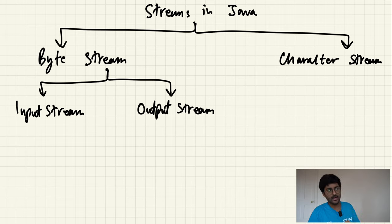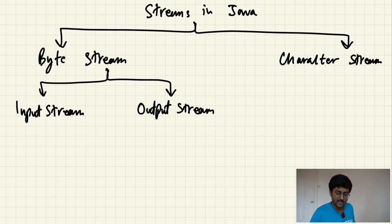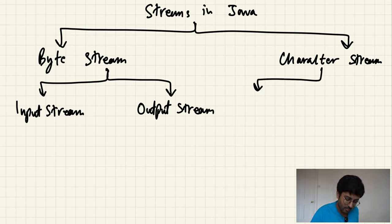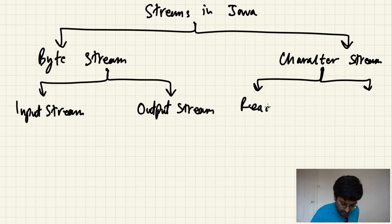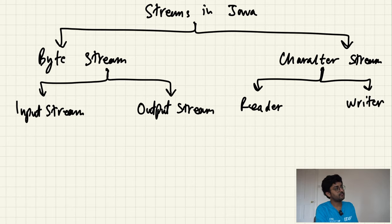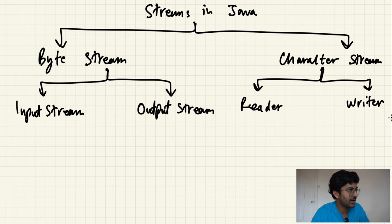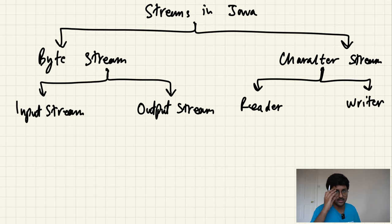Character stream is for characters — unicode characters. Since it's unicode, it can be internationalized, so you can print in Hindi, Chinese, whatever you want. In some cases, the character stream is more efficient than byte stream. Character stream can be defined into two parts: Reader and Writer. These four — InputStream, OutputStream, Reader, Writer — are abstract classes. They have function definitions and you will write your own body. Two of the most important methods are read and write.